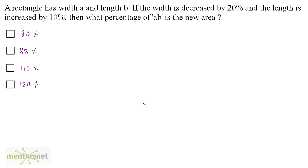A rectangle has width A and length B. If the width is decreased by 20 percent and the length is increased by 10 percent, then what percentage of AB is the new area? The length is B and the width is A, so the area equals AB.